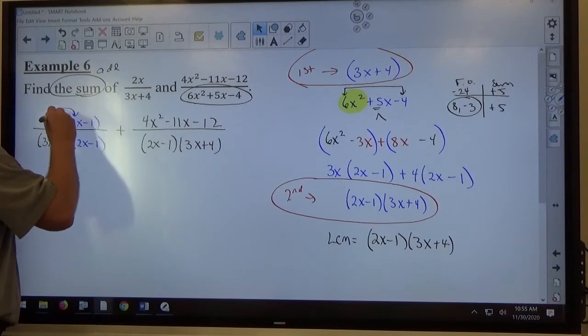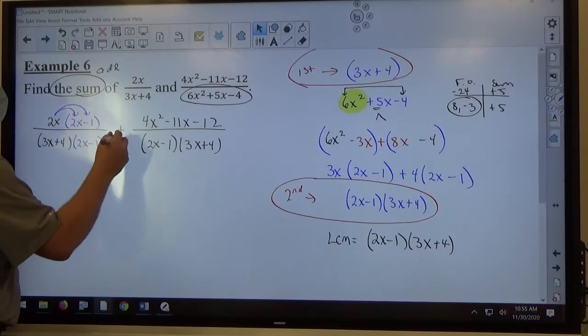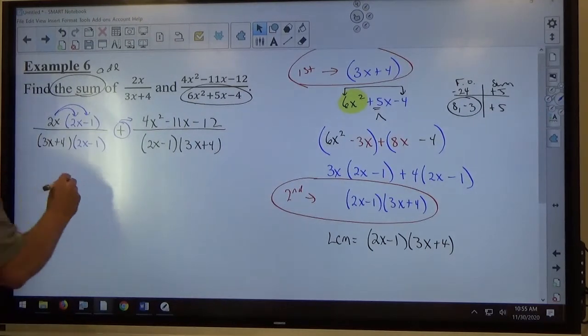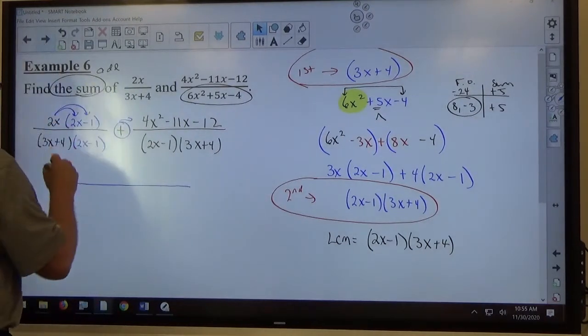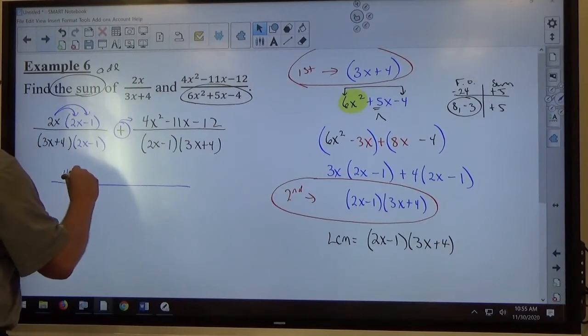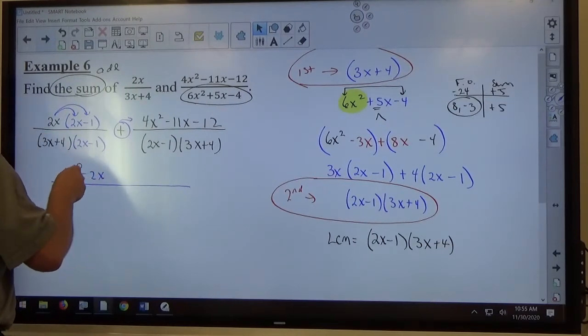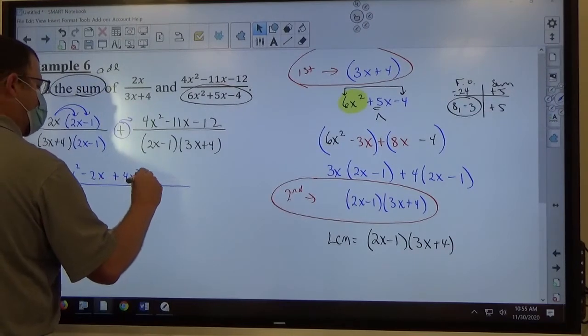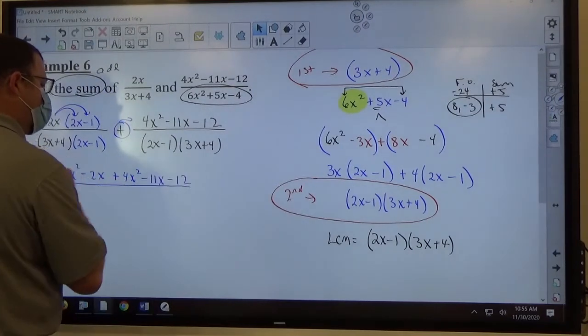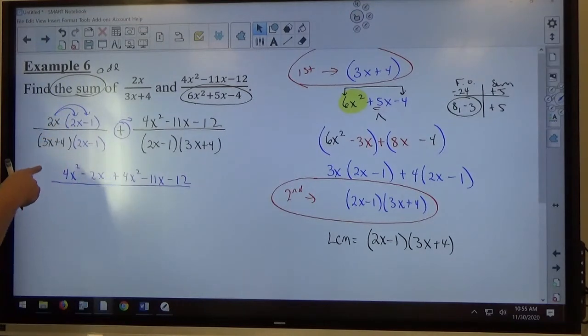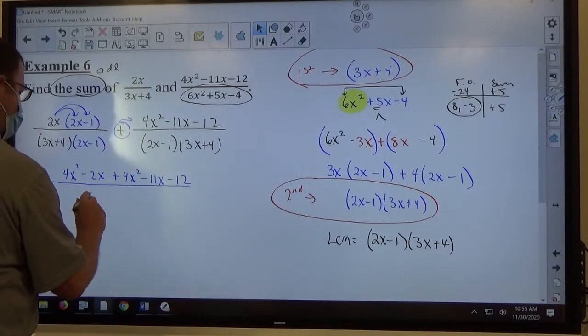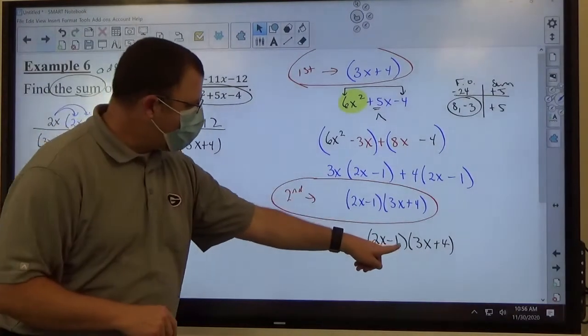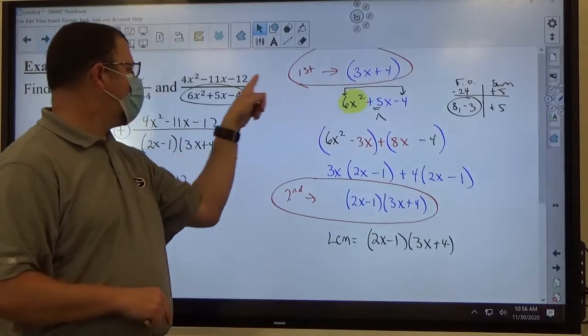I do need to do a distributive property on this. I'm only adding this expression up here, and that's already simplified out. So altogether, the first fraction's numerator is 4x² - 2x. The second fraction's numerator, we're going to be adding 4x², adding -11x, and adding -12. All that goes over the denominator, which is simply going to be 6x² + 5x - 4. This is the factored form of that.